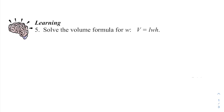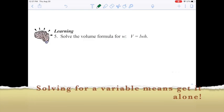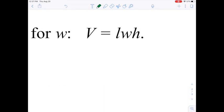Let's start doing some examples. This first one says solve the volume formula. So this is a volume formula. It says volume equals length times width times height for w. So they're saying let's solve for width. Let's get w alone. That's what solve for w means. It means get w alone.